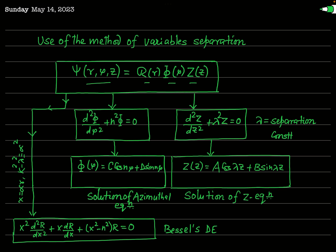The first equation obtained is called the Z equation: d²Z/dz² plus lambda-squared·Z equals zero, where lambda is a separation constant. This equation is simply the equation of oscillatory motion, so its solution Z(z) is an oscillatory or periodically varying function.